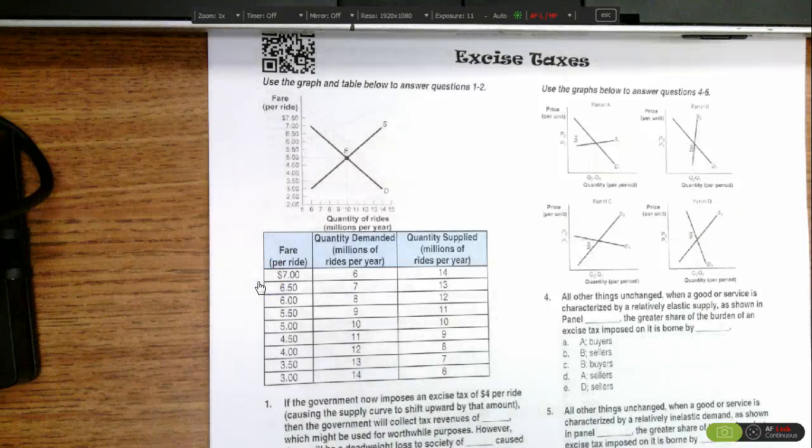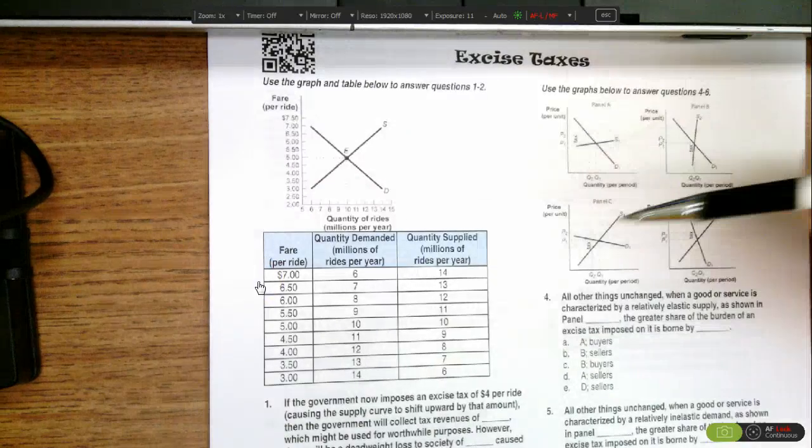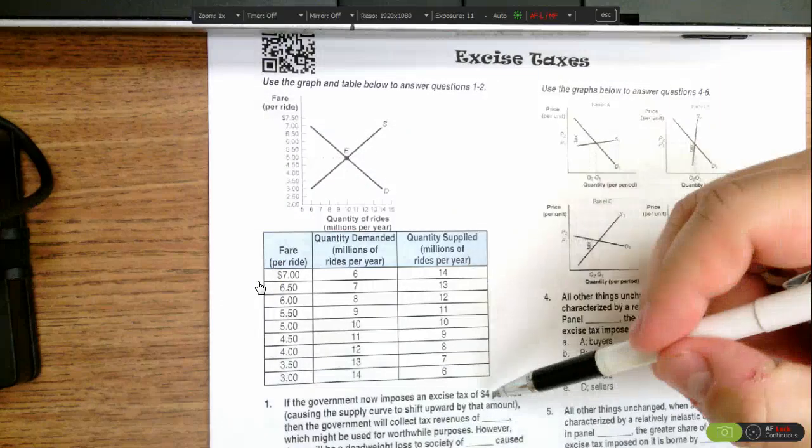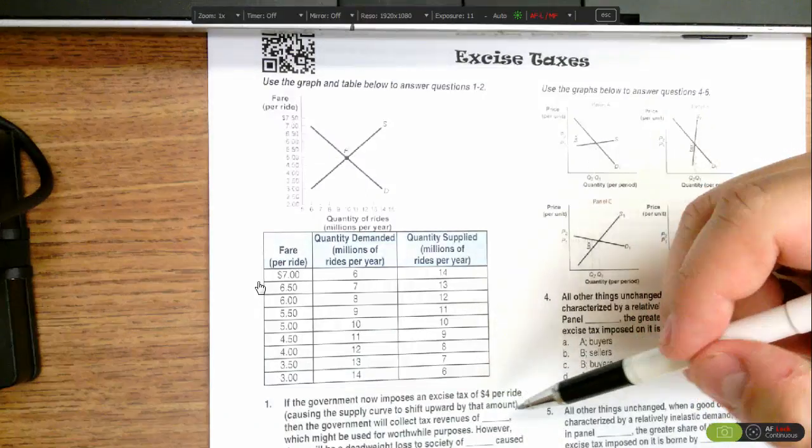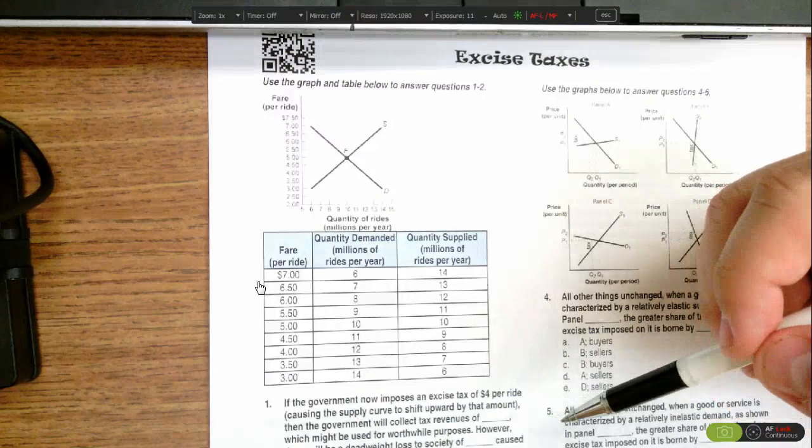This question asks how much tax revenue would be collected given an excise tax of $4 per ride, and what would be the deadweight loss to society. There are two ways to answer this question.